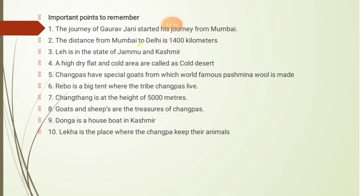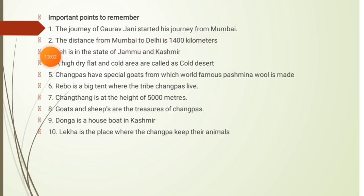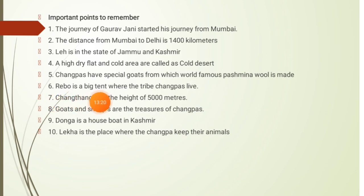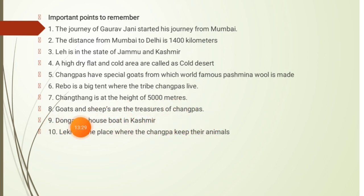The important things we learned from this chapter: the journey of Gaurav Jani started from Mumbai; the distance from Mumbai to Delhi is 1400 km; Leh is in the state of Jammu and Kashmir; a high, dry, flat, and cold area is called a cold desert; Changpas have special goats from which world-famous Pashmina wool is made; Rebo is the big tent where the Changpas tribe lives; Changthang is at a height of 5000 meters; goats and sheep are the treasures of Changpas; Donga is a houseboat in Kashmir; and Lekha is the place where Changpas keep their animals.